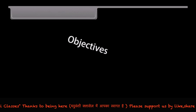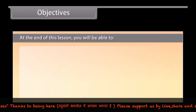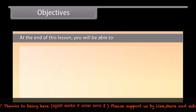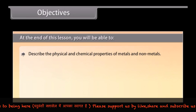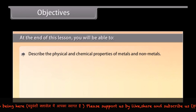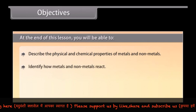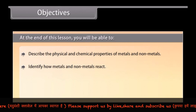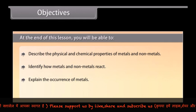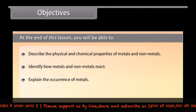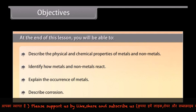Objectives: At the end of this lesson, you will be able to describe the physical and chemical properties of metals and nonmetals, identify how metals and nonmetals react, explain the occurrence of metals, and describe corrosion.